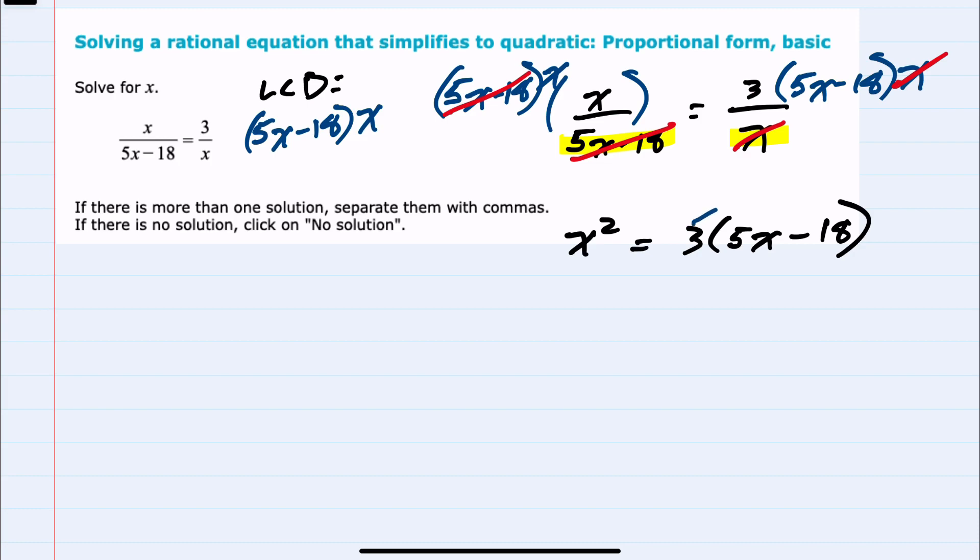We can distribute to get rid of the parentheses on the right-hand side. 3 times 5x is 15x, 3 times negative 18 is negative 54.